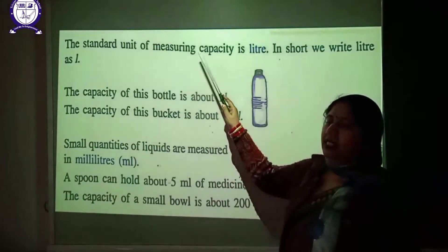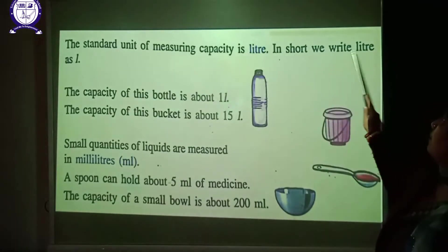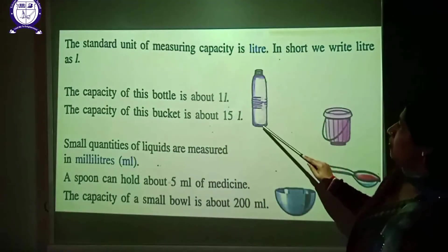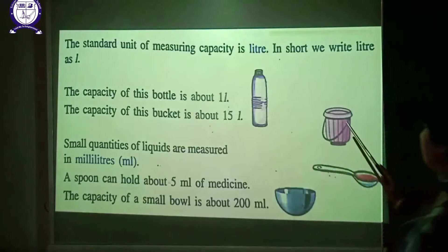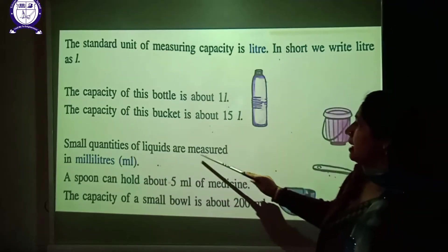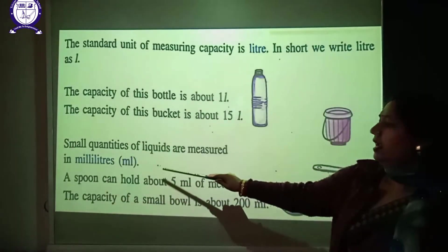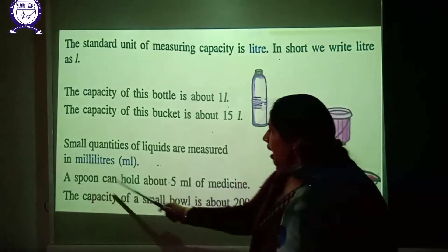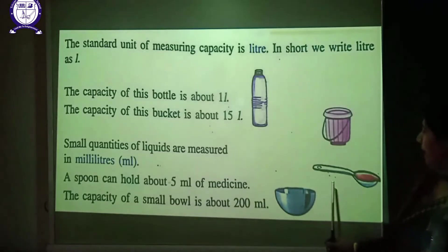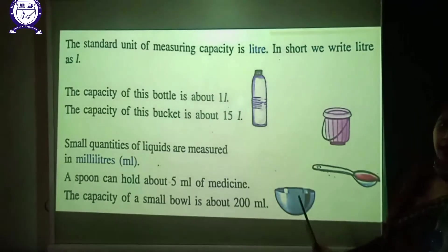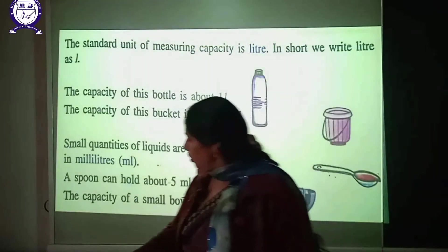The standard unit of measuring capacity is litre, written as capital 'L'. The capacity of a bottle is about 1 litre, and the capacity of a bucket is about 15 litres. Small quantities of liquids are measured in millilitres, written as 'mL'. A spoon can hold about 5 mL of medicine, and the capacity of a small can is about 200 mL.